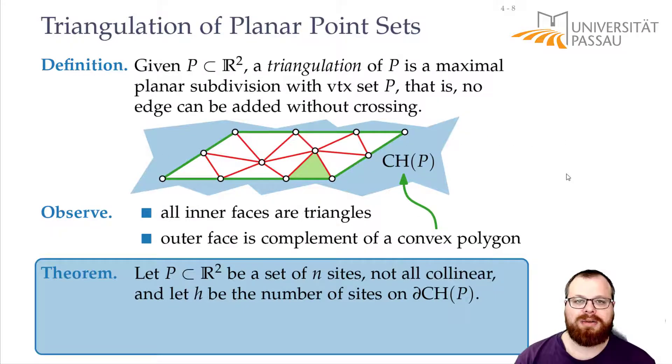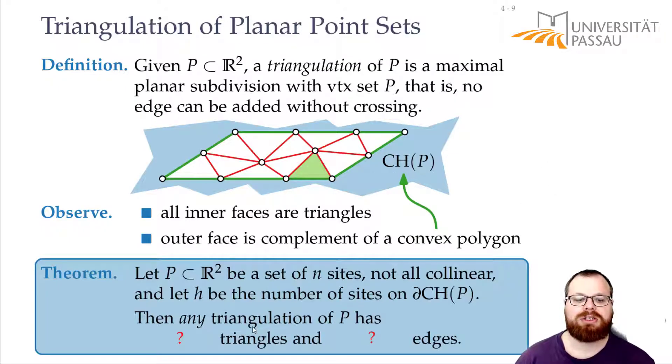And we assume that h is the number of sites on the convex hull or on the boundary of the convex hull. Now we want to figure out what is the complexity of this triangulation. So how many triangles and how many edges do we have? Can you find bounds on that?